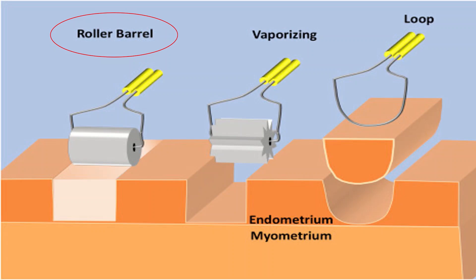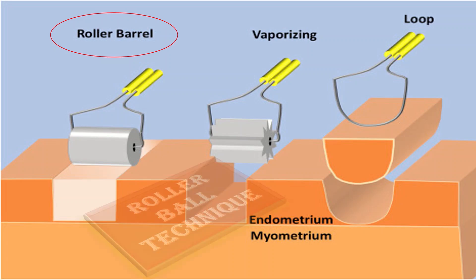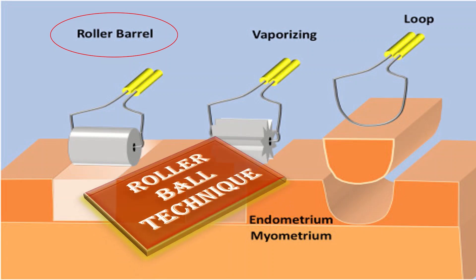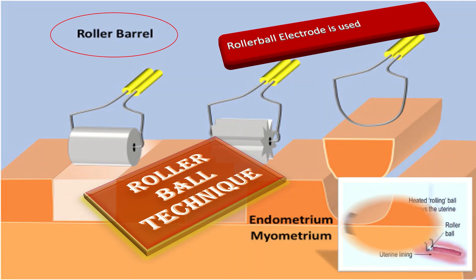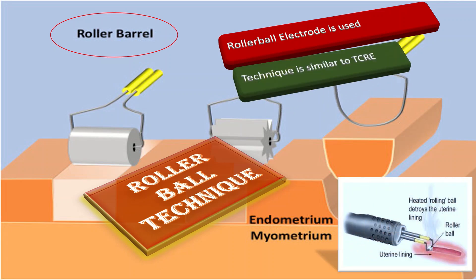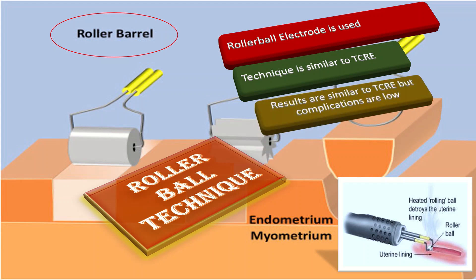The roller ball technique uses a roller ball electrode instead of a loop. The technique is similar to trans-cervical resection of endometrium but without the removal of tissue. The results are similar to TCRE, but the risk of complications is significantly lower.